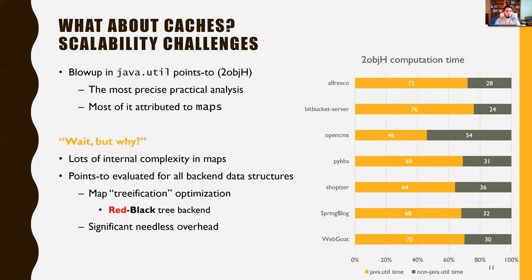During the course of this work, we observed that even the most precise analysis — the two-object-sensitive plus heap analysis — has a blowup in points-to computation while analyzing maps, while the rest of the application takes much less time. For a benchmark like Alfresco, 72% of the time is spent analyzing Java maps, and only 28% on analyzing the application itself. This trend holds across all our benchmarks.